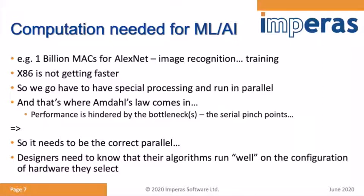New applications for machine learning and AI are very compute intensive. An example I'll cover later is LXNet, which requires 1 billion multiply-accumulates for image recognition. Since x86 architecture is not getting faster, parallel architectures have real appeal — but the key question is how we avoid the bottlenecks that Amdahl's Law predicts.